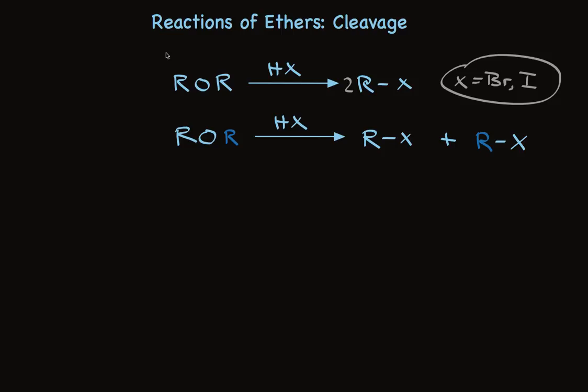So there you have it. Ethers cleave when treated with HBr or HI to make two moles of an alkyl halide. Symmetrical ethers make a single product; unsymmetrical ethers make two alkyl halides.